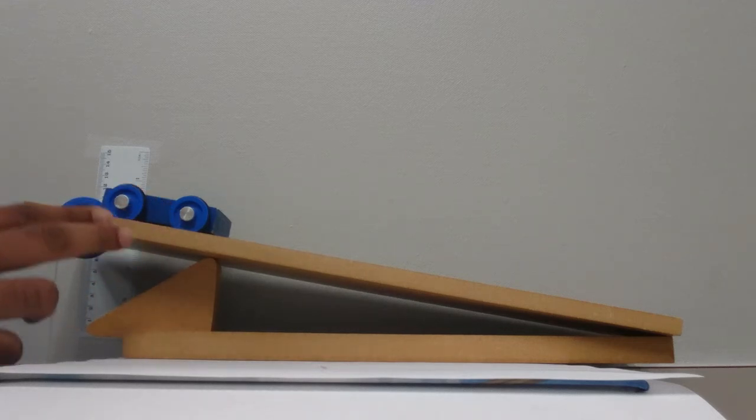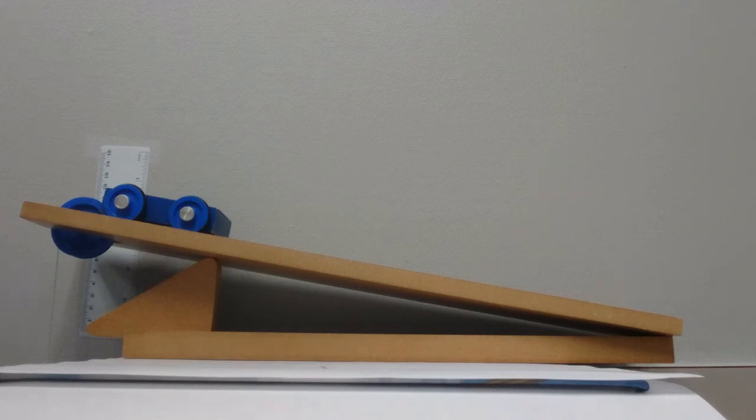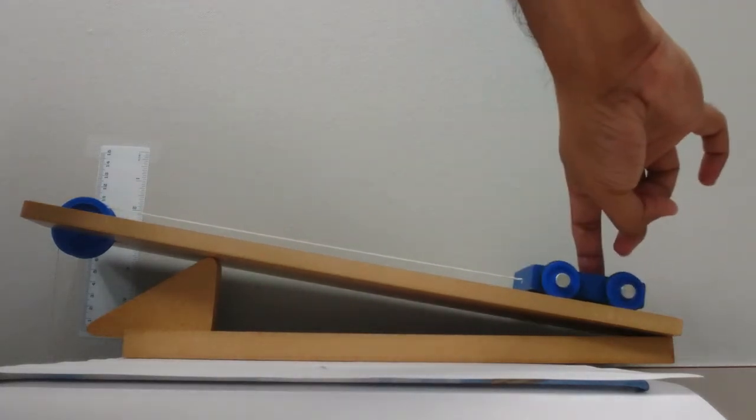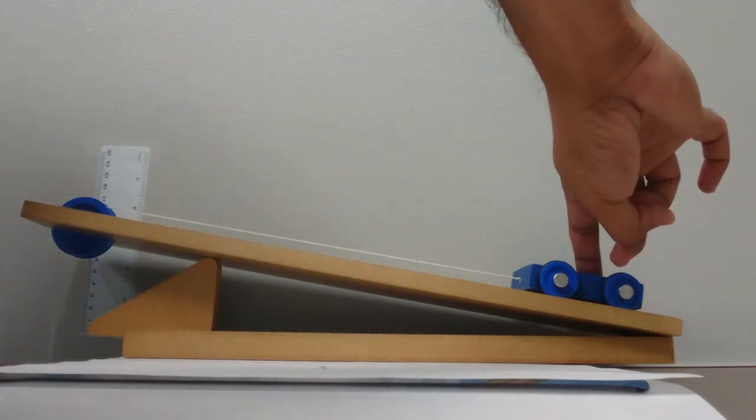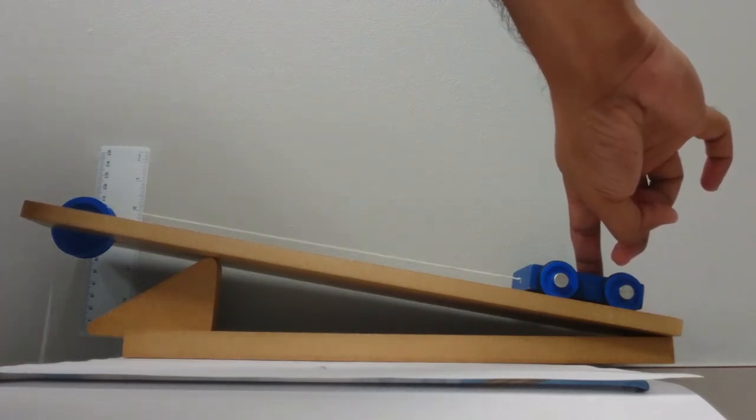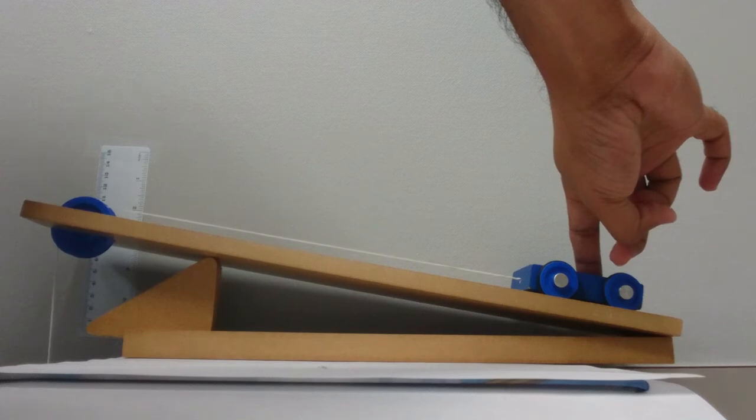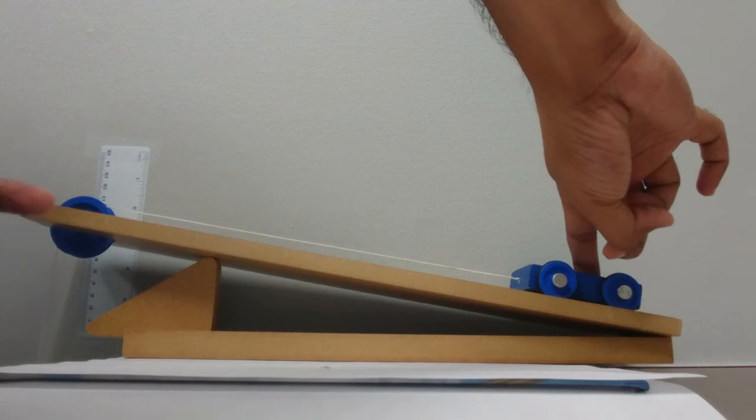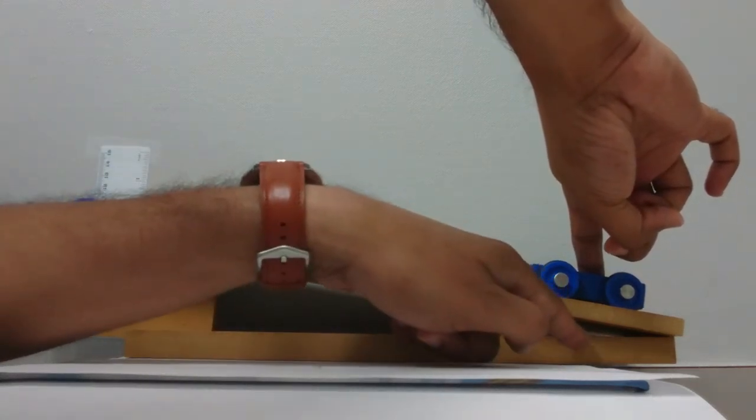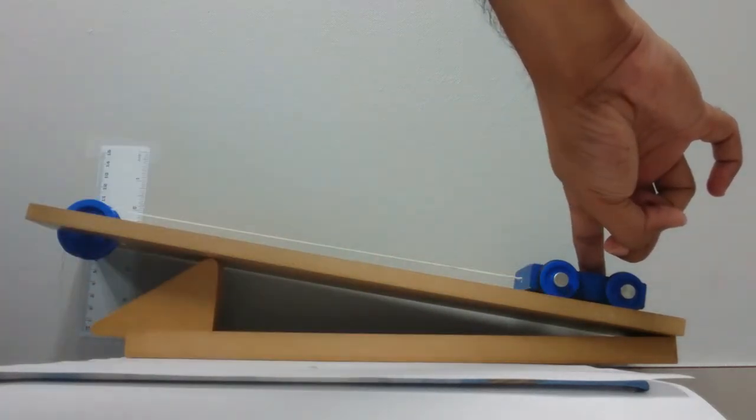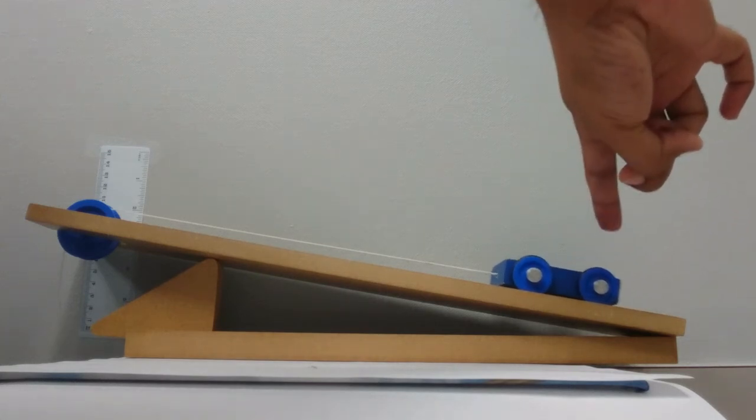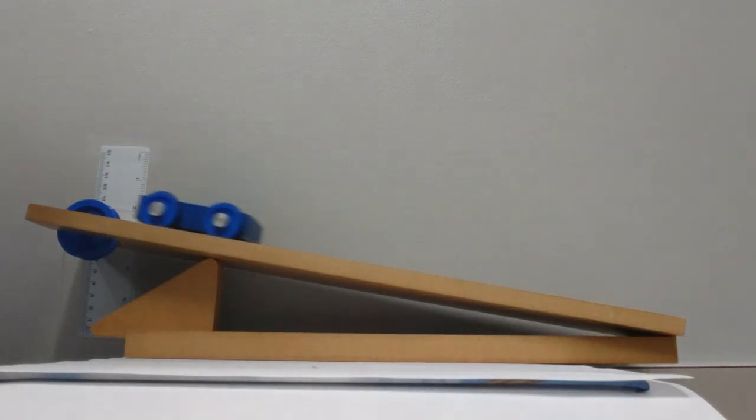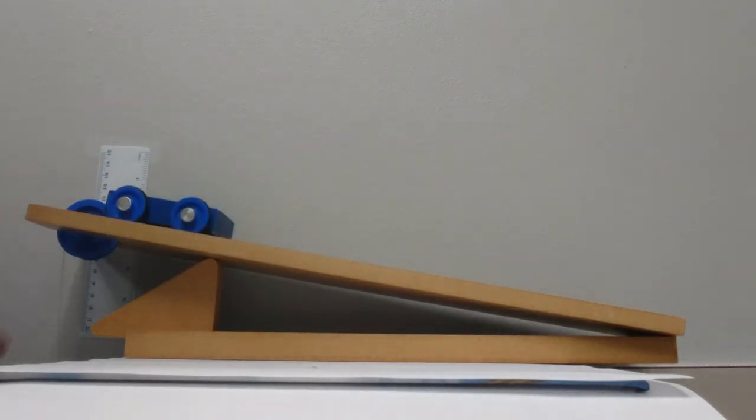So previously you saw that when it was a vertical position we couldn't lift the car with the 0.2 Newton block. But now here you see we have the block here pulling tight on this rope and we're using incline plane and we're raising the car which is at position 0 centimeter. And we let it go using the same force 0.2 Newton, we're raising the car up to this height.